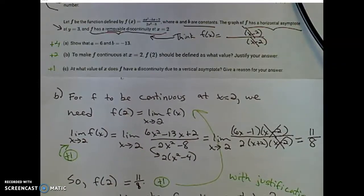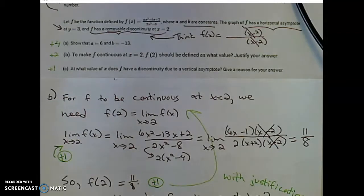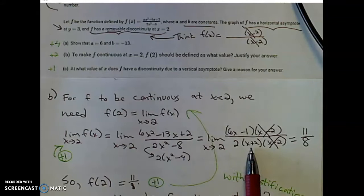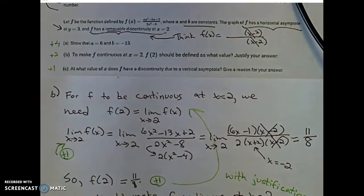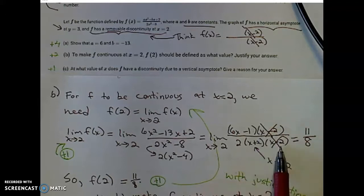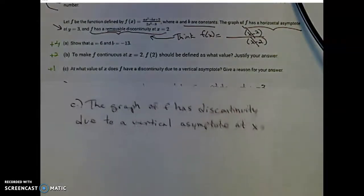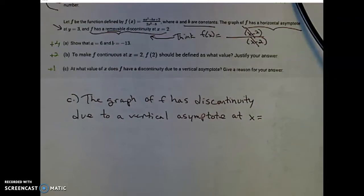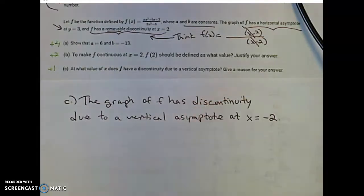Let's read part C. At what value of x does f have a discontinuity due to a vertical asymptote? And give a reason for your answer. From part B, trust your instincts. We have a vertical asymptote at the x value that makes that denominator undefined. So we know that we have a vertical asymptote at x equals negative 2. We have a vertical asymptote after we remove, get rid of that removable discontinuity, we will have a vertical asymptote at x equals negative 2. I'm providing the AP solution how they phrased this carefully. The graph of f has discontinuity due to a vertical asymptote at x equals negative 2.